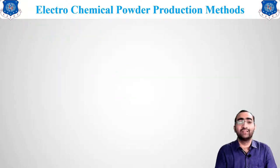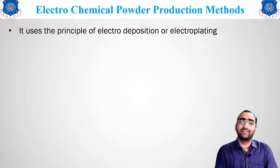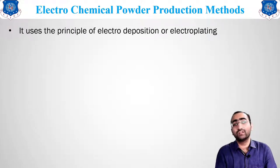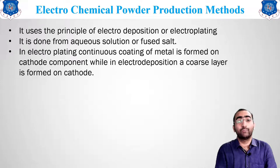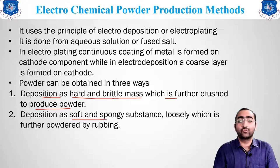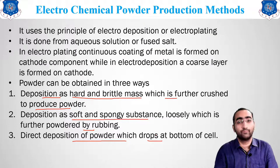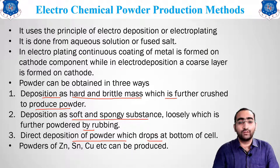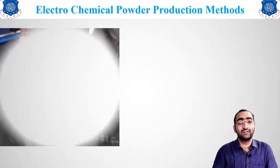The last category is the electrochemical powder production method, which uses the principle of electro deposition and electroplating — similar to silver plating on a copper spoon. It is done in an aqueous solution with continuous plating. Powder can be obtained in three ways: first, deposition as a hard and brittle mass which is further crushed to powder; second, deposition as a soft and spongy substance removed by rubbing; and third, direct deposition of powder that drops to the bottom. Applicable metals include zinc, tin, and copper.